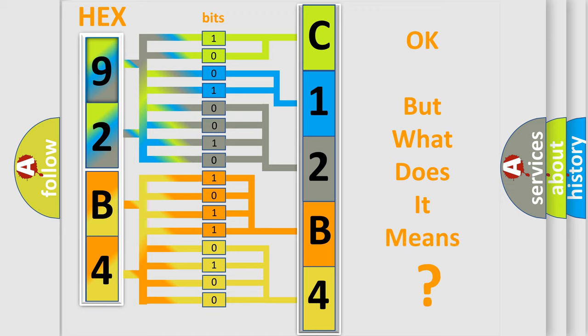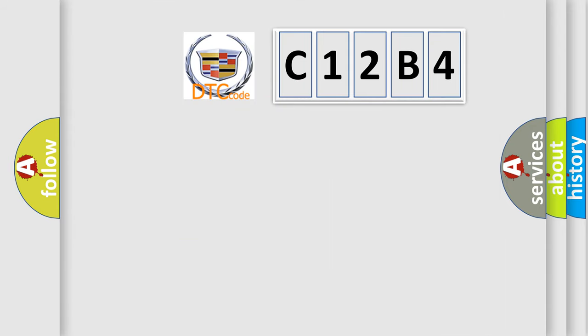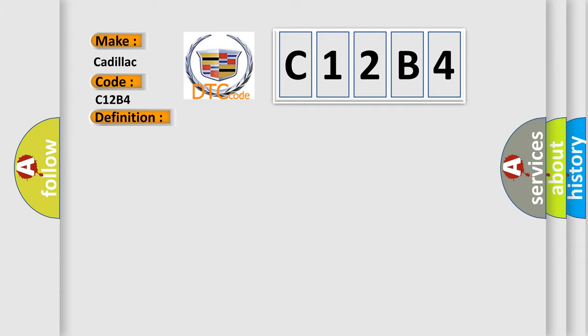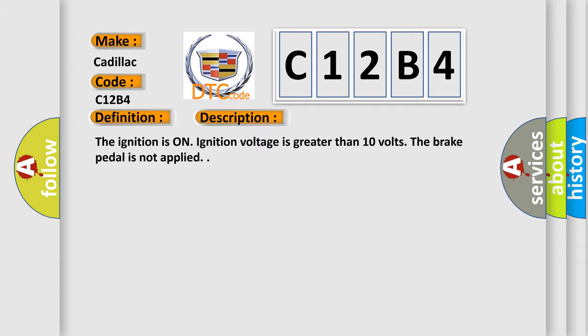The number itself does not make sense to us if we cannot assign information about what it actually expresses. So, what does the diagnostic trouble code C12B4 interpret specifically? Cadillac — car manufacturers. The basic definition is: master cylinder pressure sensor erratic. And now this is a short description of this DTC code.